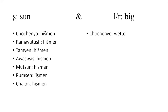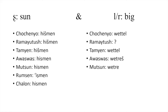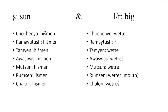Let's look at the word for 'big.' Chochenyo is 'wettel,' and the word for Ramaytush was not documented. Tamien is 'wettel,' Awaswas is 'wettel,' Mutsun is 'wettel,' Rumsen is 'wettel,' and Chalon is also 'wettel' — though Chalon's form takes the R, which is why it is considered transitional and does not always follow Northern Ohlone rules.